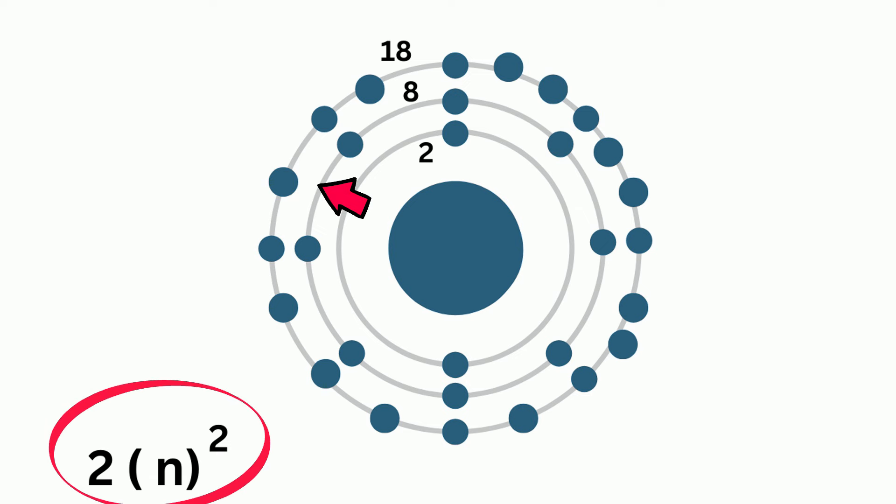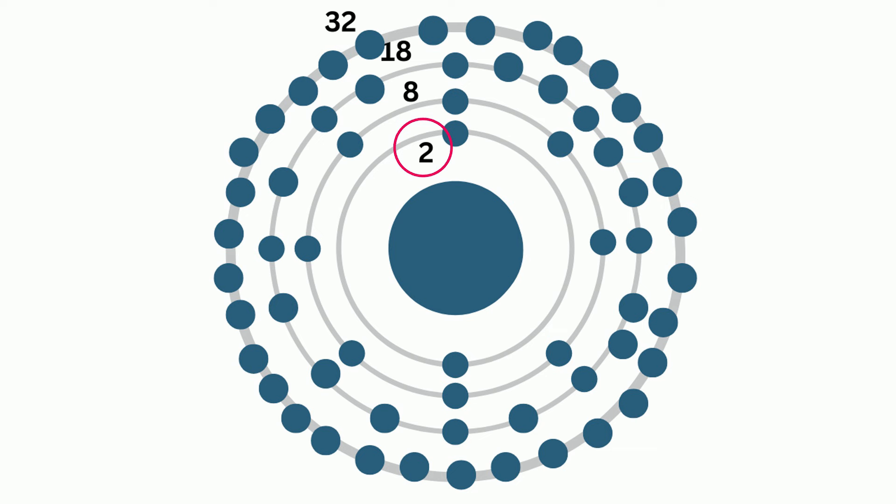So let's look at at least the first four levels. Level 1, you have 2 times 1 squared, which is 2. Level 2, you have 2 times 2 squared, which equals 8. Level 3, you have 2 times 3 squared, which is 18. And then level 4, you have 2 times 16, which is 4 squared, and that is 32.